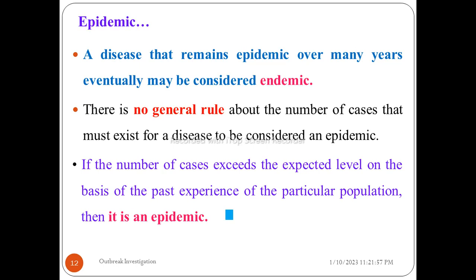There is no general rule about the number of cases that must exist for a disease to be considered an epidemic. If the number of cases exceeds the expected level on the basis of past experience of the particular population, then it is considered epidemic.